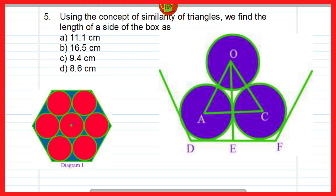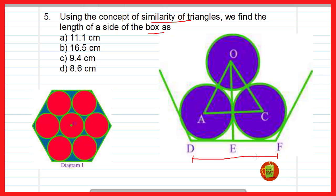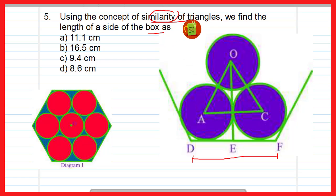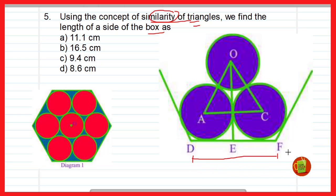The fifth question uses the concept of similarity of triangles to find the length of the side DF of the box. This question is left for you to solve — give your answer in the comment box. Hint: you will need to do a construction and apply similarity of triangles. First find DE, then since E is the midpoint, EF equals DE, and DF = 2 × EF.